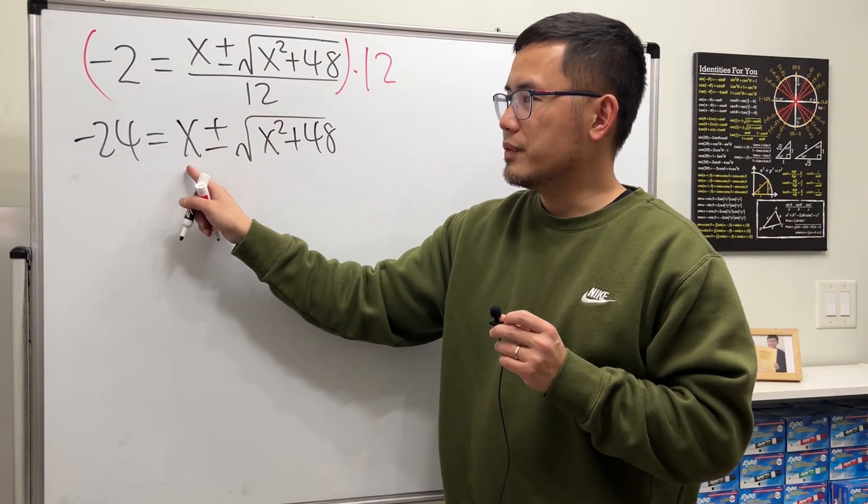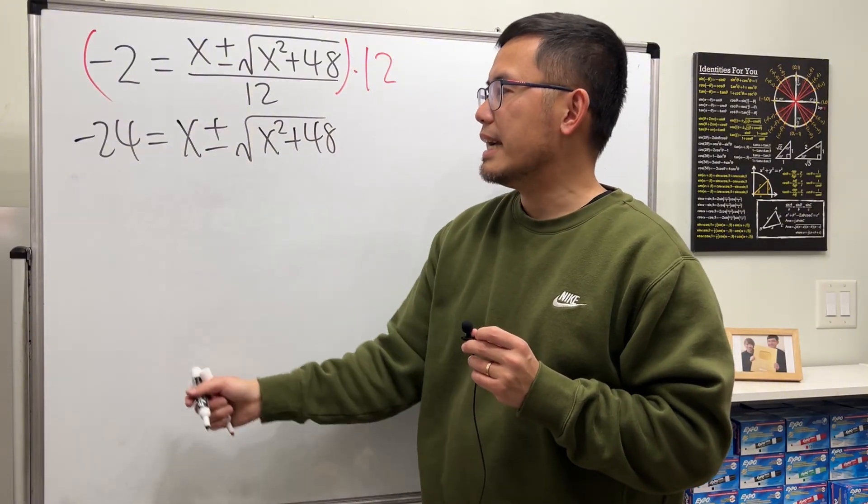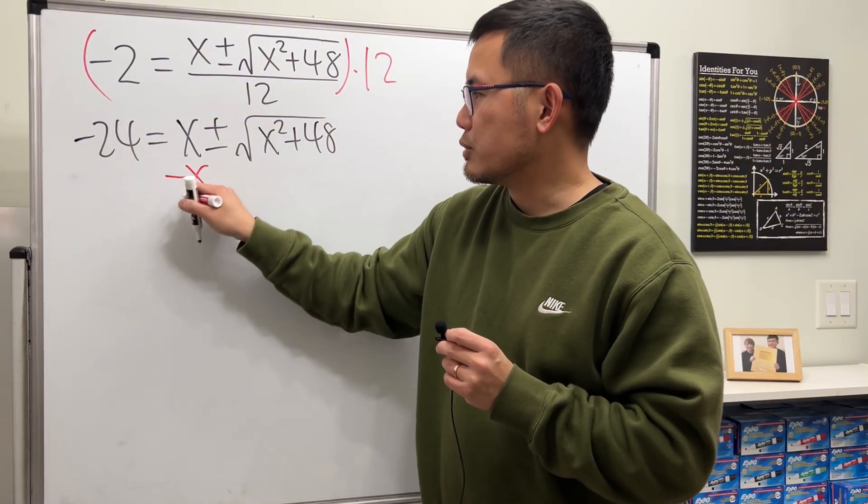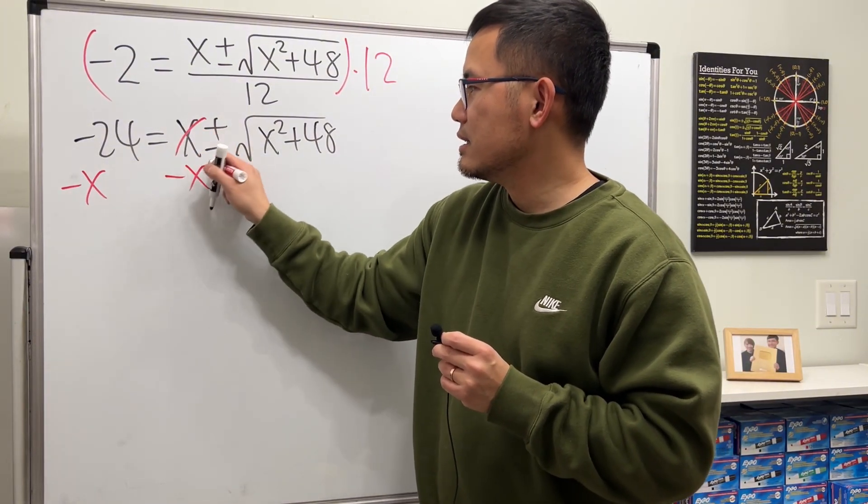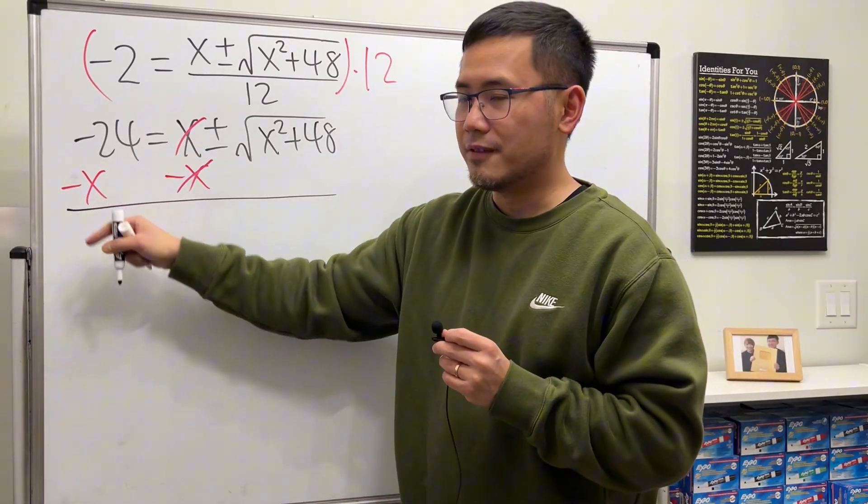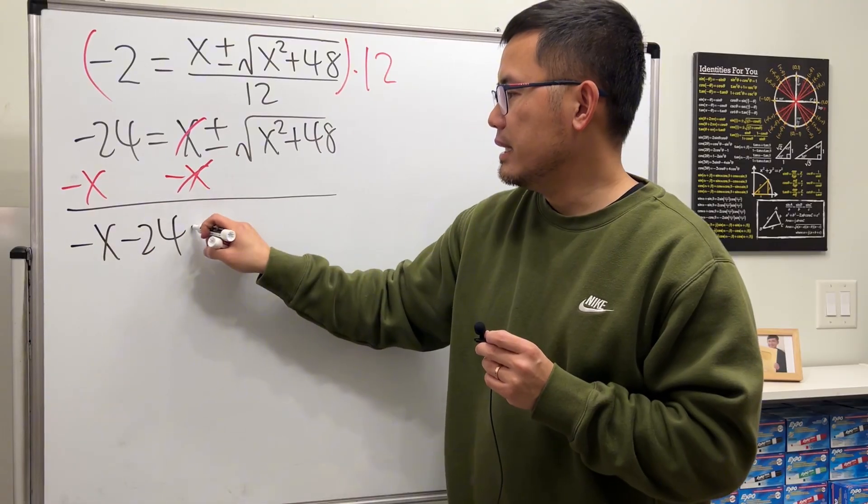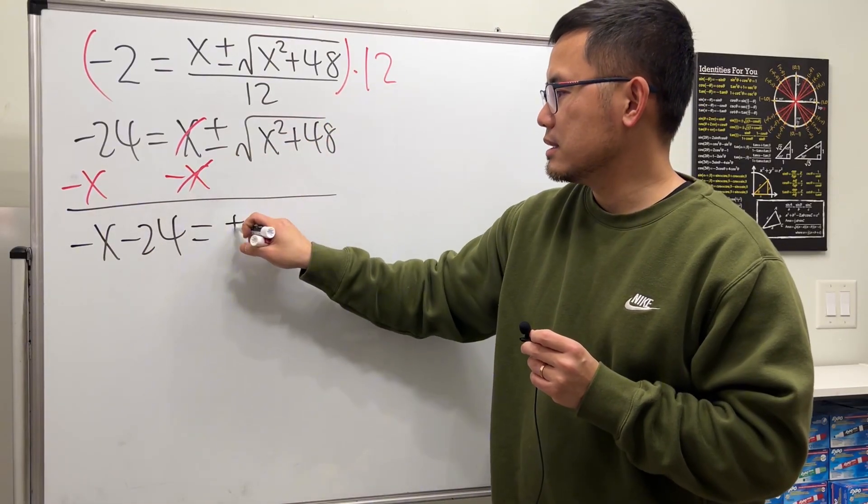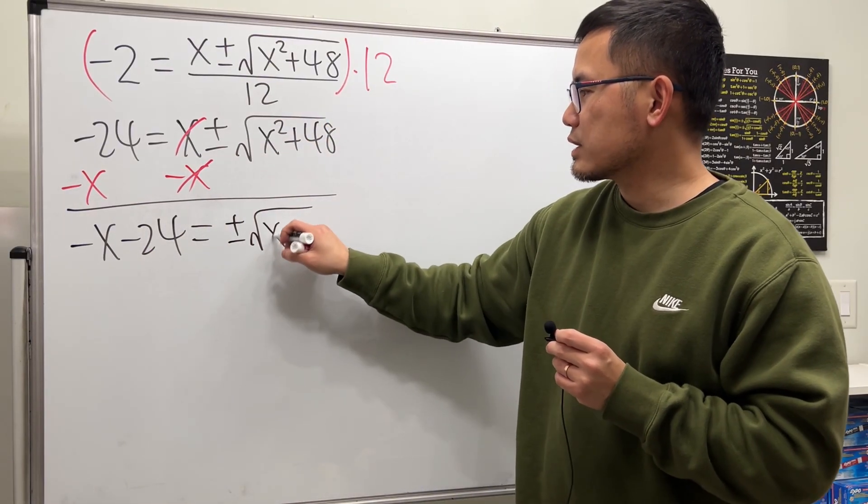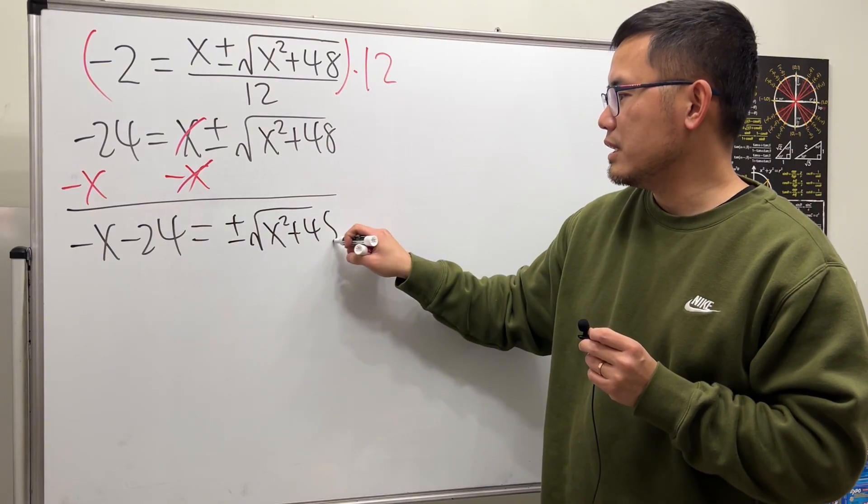Now we can move the x to the other side, and now we'll just subtract x on both sides like this, and we will get, let's put on the x term first. Negative x minus 24 equals plus or minus square root of x squared plus 48.